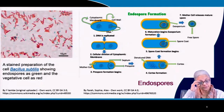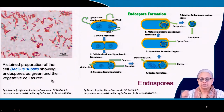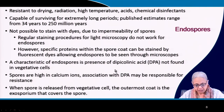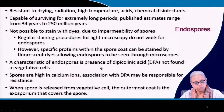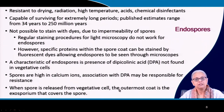Here is an example of endospores of Bacillus subtilis. In this stained preparation, the green structures are the endospores and the red cells are the vegetative cells. These spores have very high calcium concentrations in combination with dipicolinic acid. Dipicolinic acid is produced by the vegetative cells to create these endospores. It is present only in the endospores, not in the vegetative cell, and the calcium associated with DPA may be providing resistance of the endospore to all those hostile conditions. When the spore is released from the vegetative cell, the outermost coat is called the exosporium, which provides protection to the spores.